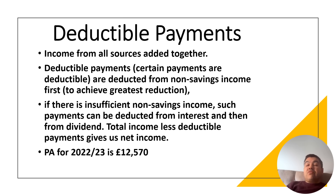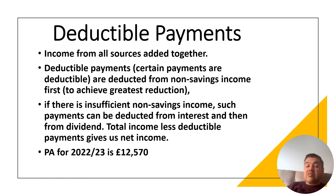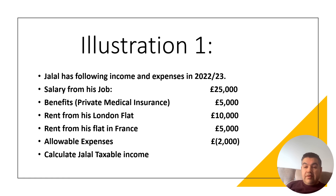Deductible payments: income from all sources is added together, then deductible payments are deducted from non-saving income first. If an individual is entitled to a deduction they can claim it on their self-assessment. If there is insufficient non-saving income, such payments can be deducted from interest income and then from dividend income. Total income less deductible payments gives you net income. Also do not forget to deduct the personal allowance — for 2022–23 it is £12,570.